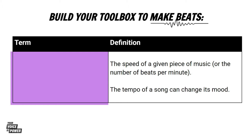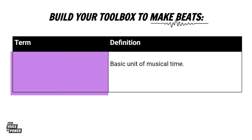The tempo of a song can change its mood. What is a beat? A beat is the basic unit of musical time. Beats give your song rhythm and let you move and dance to the feel of the music. The faster the beat, the higher the tempo. Slower beats mean a slower tempo. Beats and tempo determine the mood of a song.